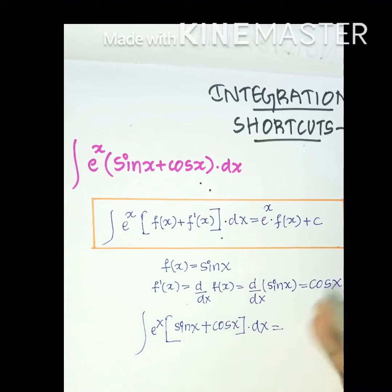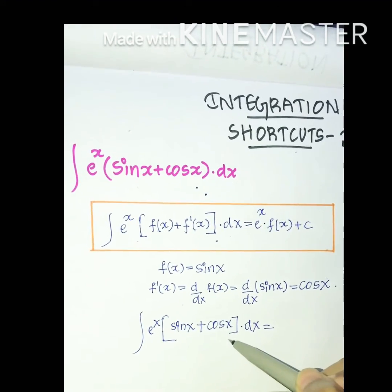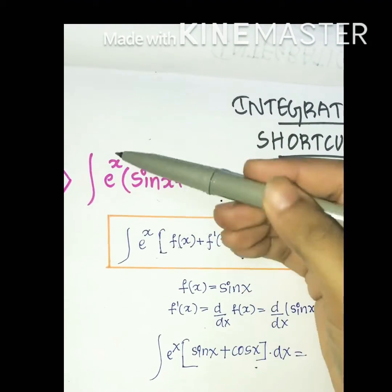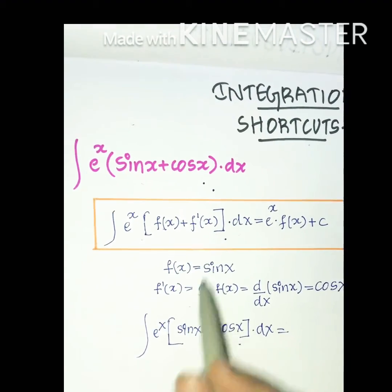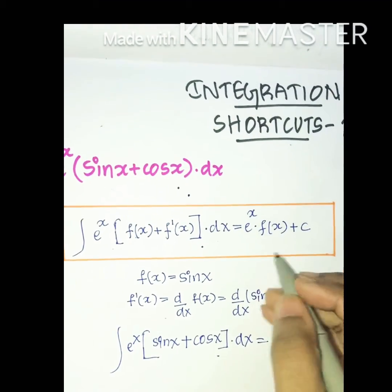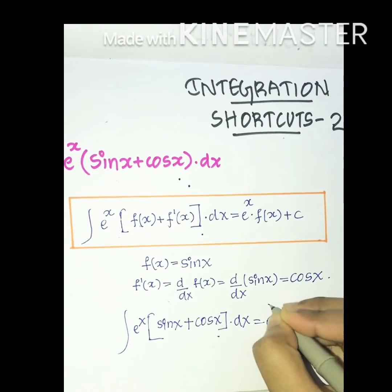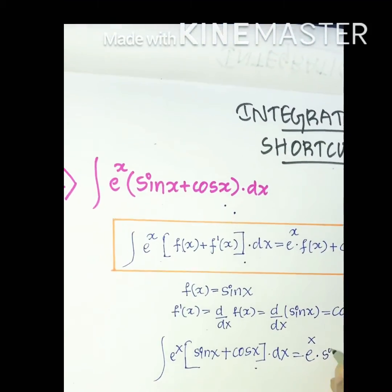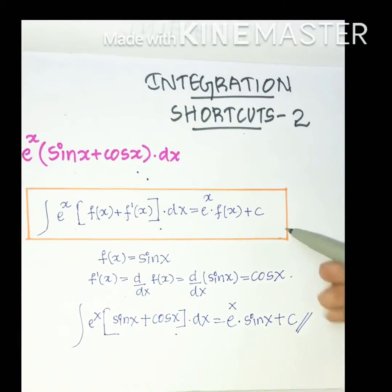The given question is in the form of the shortcut, so we substitute f(x) and f'(x). The term eˣ·[sin x + cos x] matches exactly. Therefore the answer is eˣ·f(x) + C, which is eˣ·sin x + C.